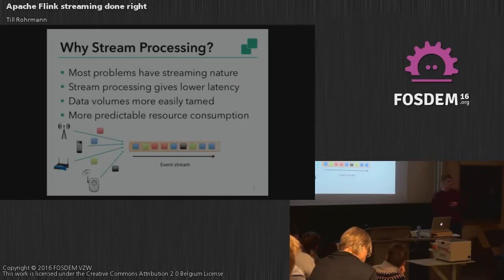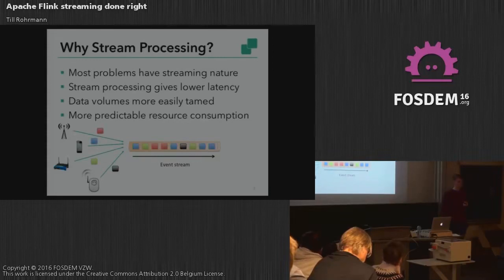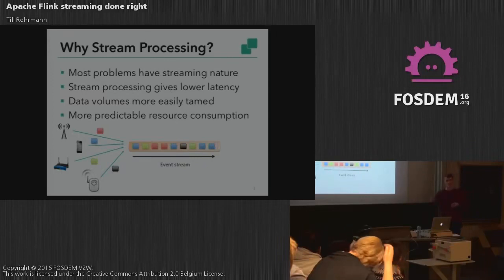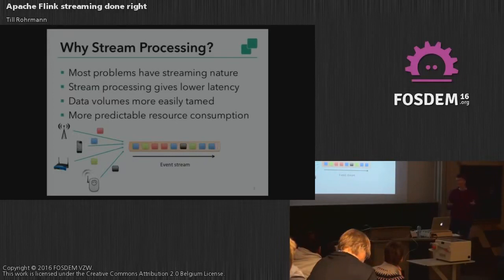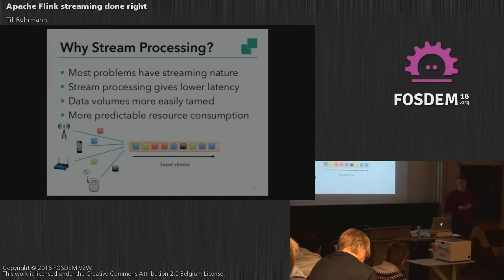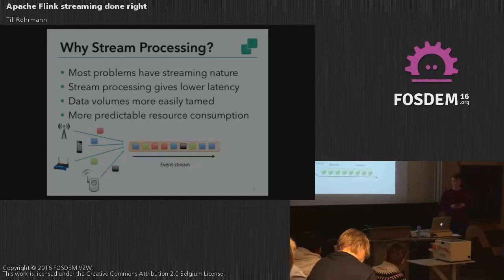Before we dive in, let's quickly talk about stream processing and why it has become so popular. One of the reasons is that many of the problems we face today, which we used batch systems for, are actually stream in nature. So it would make sense to process the events when the data arrives, not batching it up to process at a later time. By doing so, you have faster results, you don't have to store all the data, and you have more predictable resource consumption in your cluster.